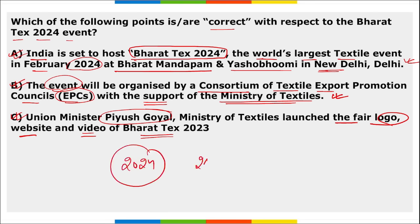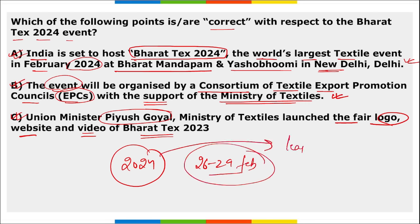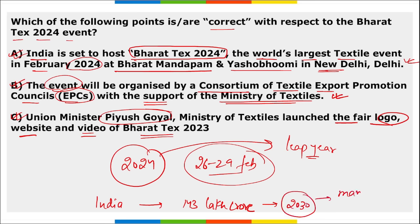It will be from 26th to 29th February. As 2024 will be a leap year. India plans to invest 143 lakh crore rupees in the next six years, that is by the year 2030, in the manufacturing sector in order to enhance manufacturing in India.